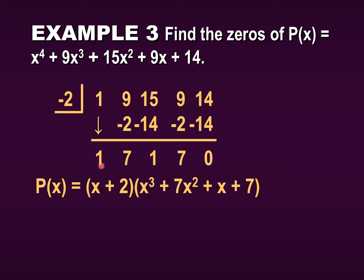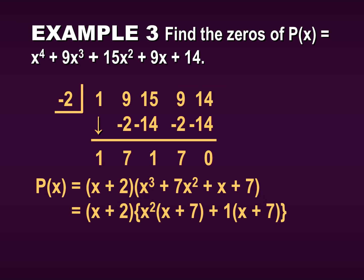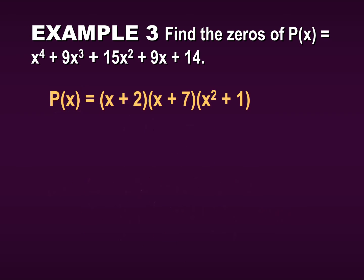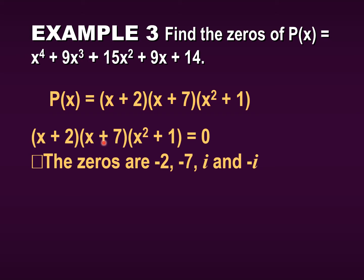After synthetic division we're left with x cubed plus 7x squared plus x plus 7. We factor out x squared from the first two terms to get x squared times (x plus 7), and then factor out x plus 7 to get (x plus 7)(x squared plus 1). Solving these three factors: x plus 2 gives x equals negative 2, x plus 7 gives x equals negative 7, and x squared plus 1 gives x equals plus or minus i.